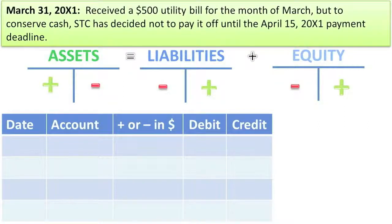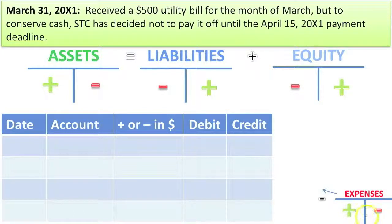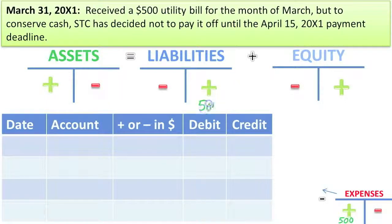On March 31st we receive a $500 utility bill for the month of March, but to conserve cash, SCC has decided not to pay it off until the following month, April 15th. We've already used up a service, so there's no future benefit to the utilities we've received. We've got to indicate that we've used up this service by recording more expense — utilities expense. We didn't pay cash yet, so we owe payment — $500 more.